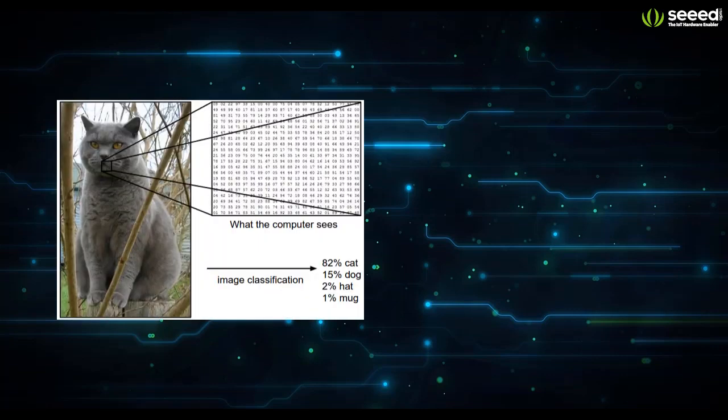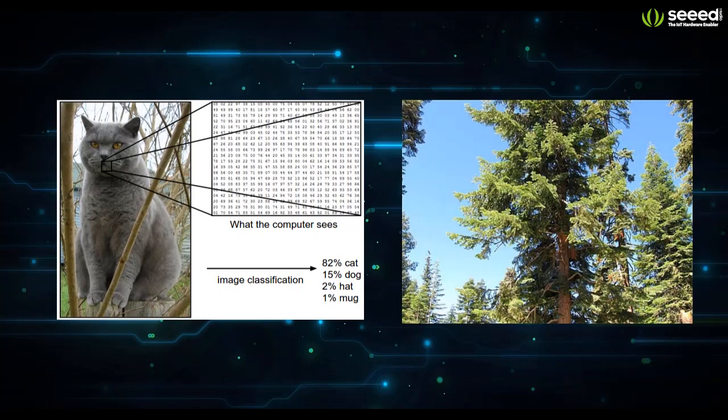Whiskers? Two eyes and a black nose? Must be a cat. Green leaves? A tree trunk? Looks like a tree! I hope you can get the idea about the working principle of CNN now.